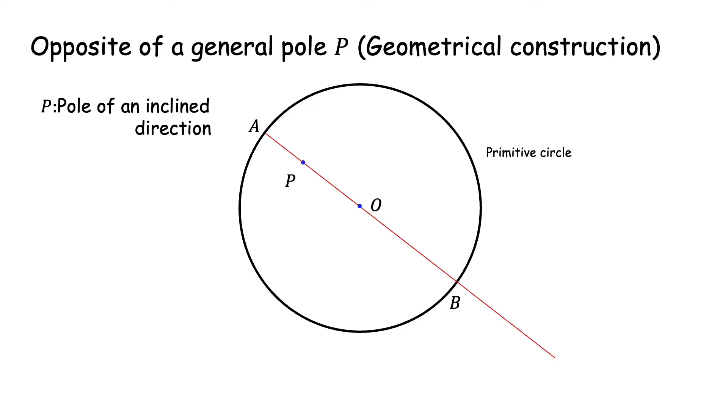Since AB, the diameter passing through P represents a plane, in this case a vertical plane passing through P, the opposite of the direction P will also lie on this plane. And opposite pole of a pole inside the primitive will project outside the primitive. That is the reason we have extended the diameter.